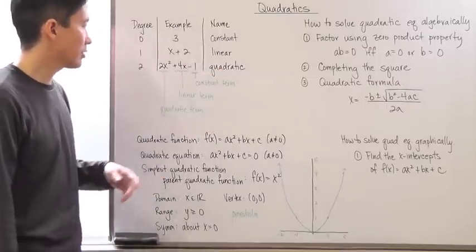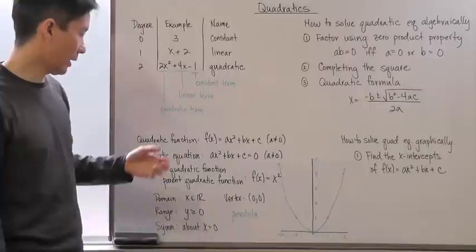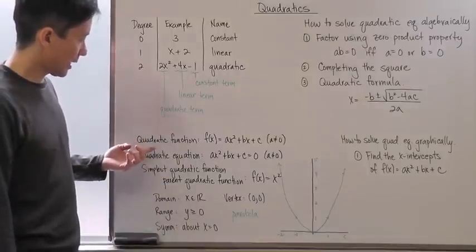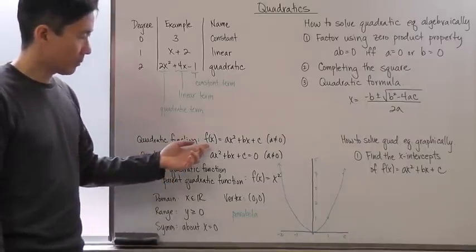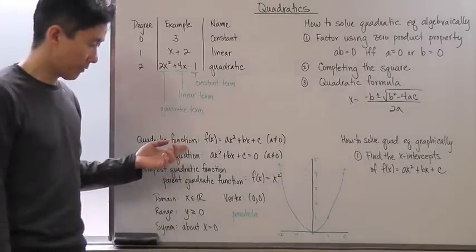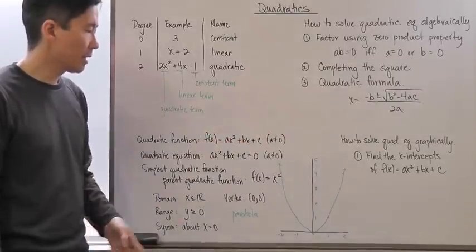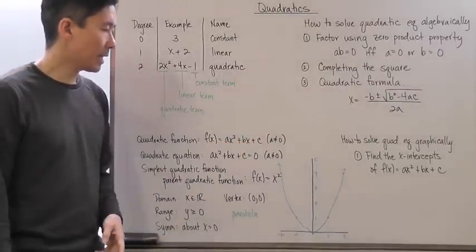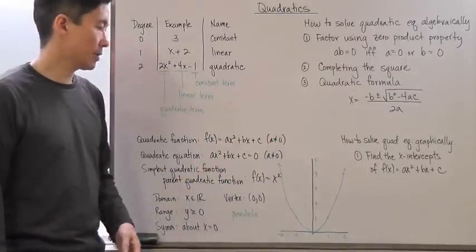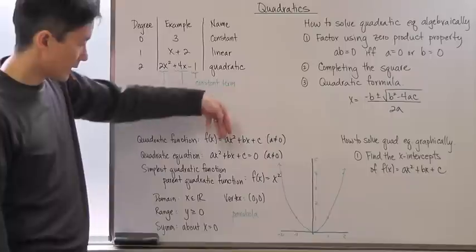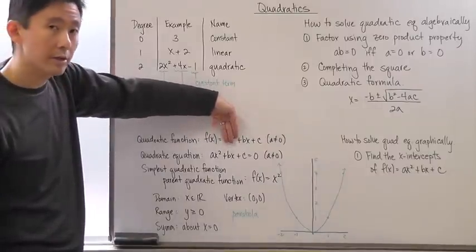The most important thing about the quadratic is that it has to be a degree 2 polynomial. With the quadratic function, we have f(x) equal to ax squared plus bx plus c, where a, b, and c are numbers. We know that a cannot be equal to 0 — that's obvious because if we eliminate that term, it's no longer quadratic; it's going to be a linear function.